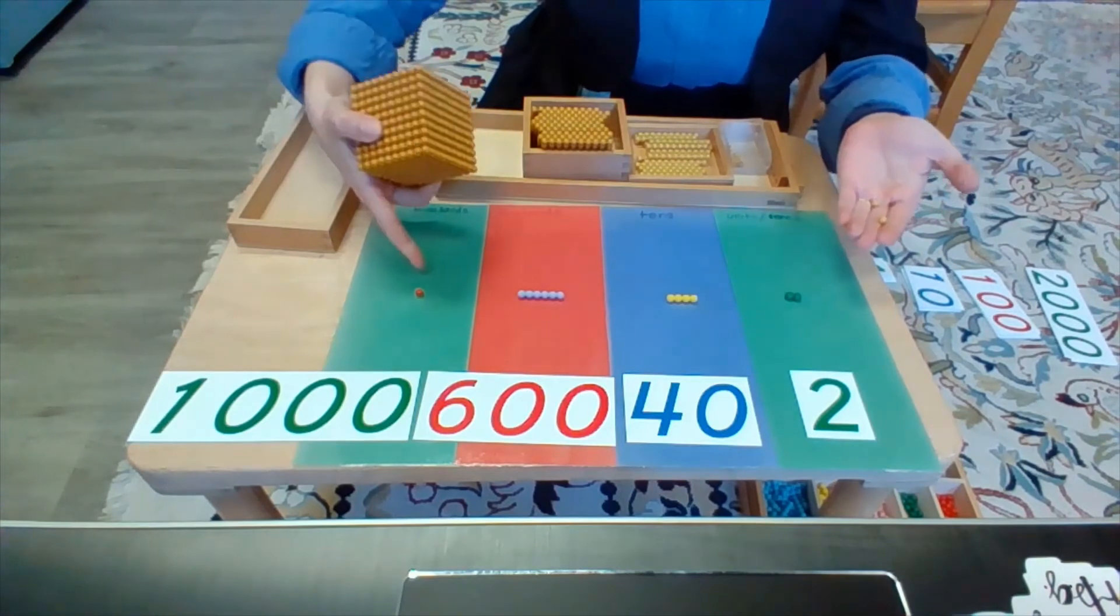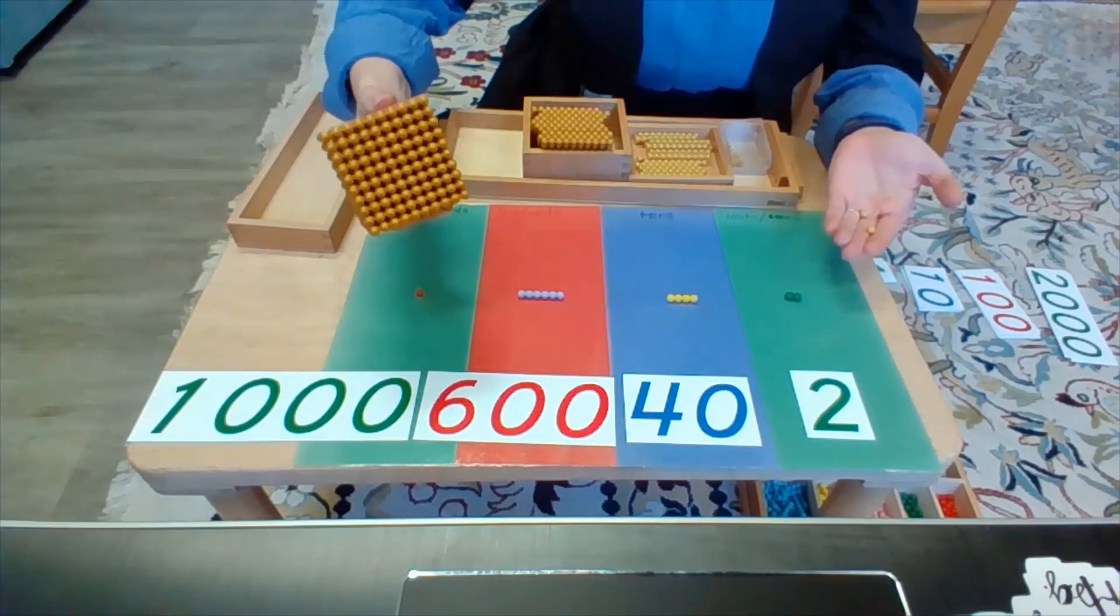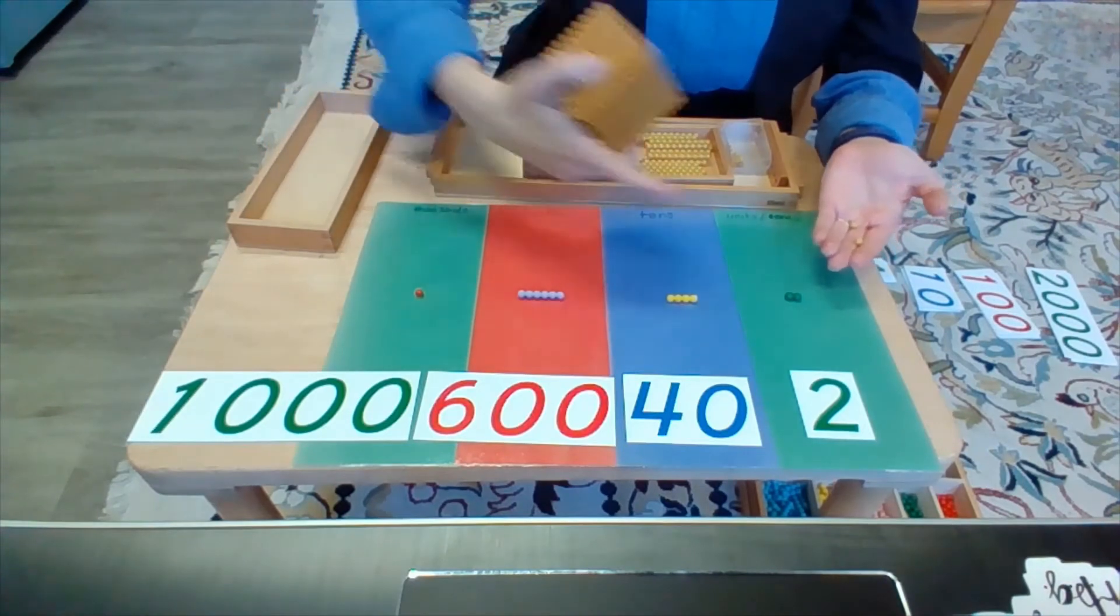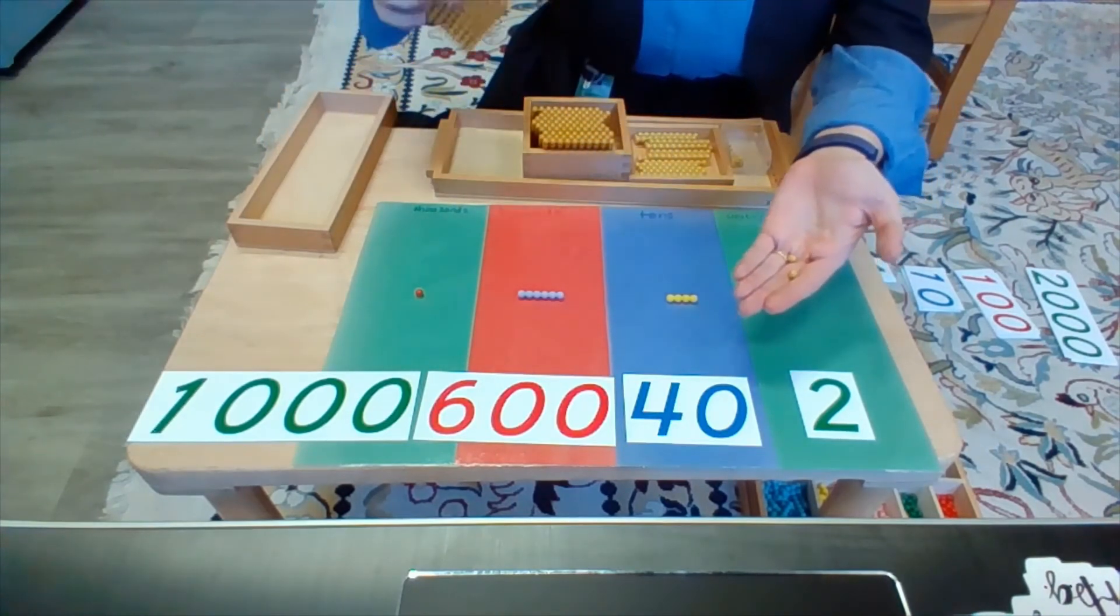The number 1 might not be very big, but it's what it represents. 1,000 beads compared to just 2 units.